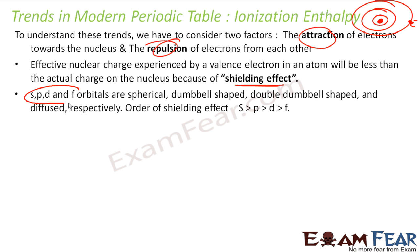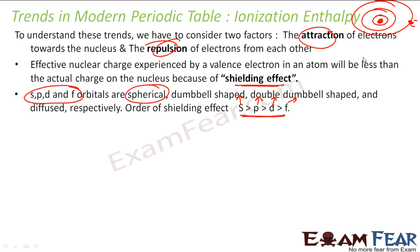S, P, D, F orbitals — as I have explained, the shielding effect is in this order: S orbital has maximum shielding effect, P has lesser, D has less, and F has the least. Why? Because of the shape — S is spherical. For example, if this is my nucleus, my S orbital covers the whole nucleus properly.